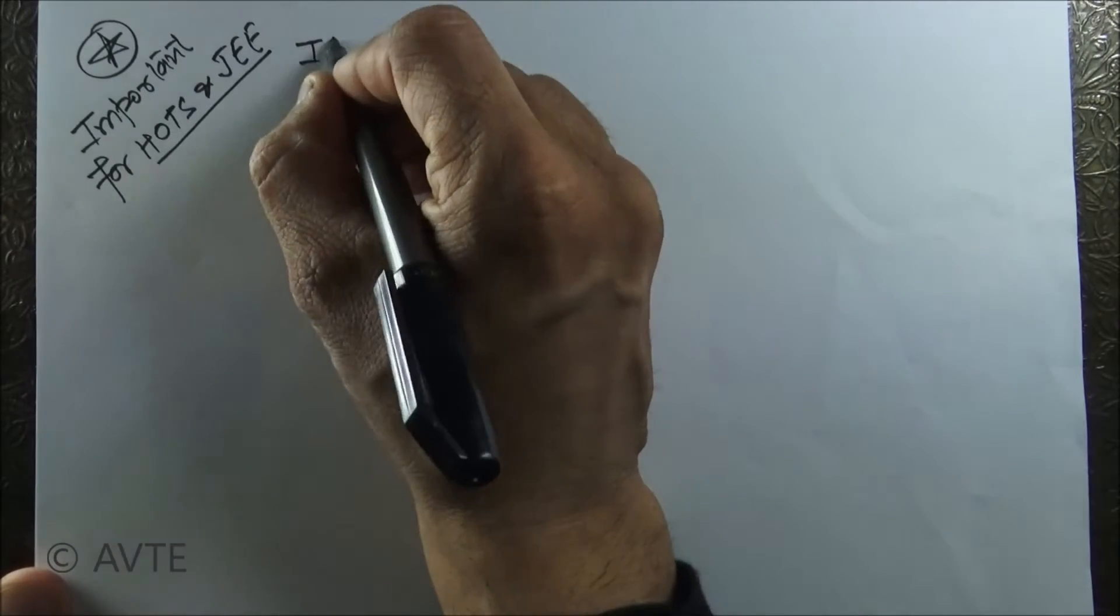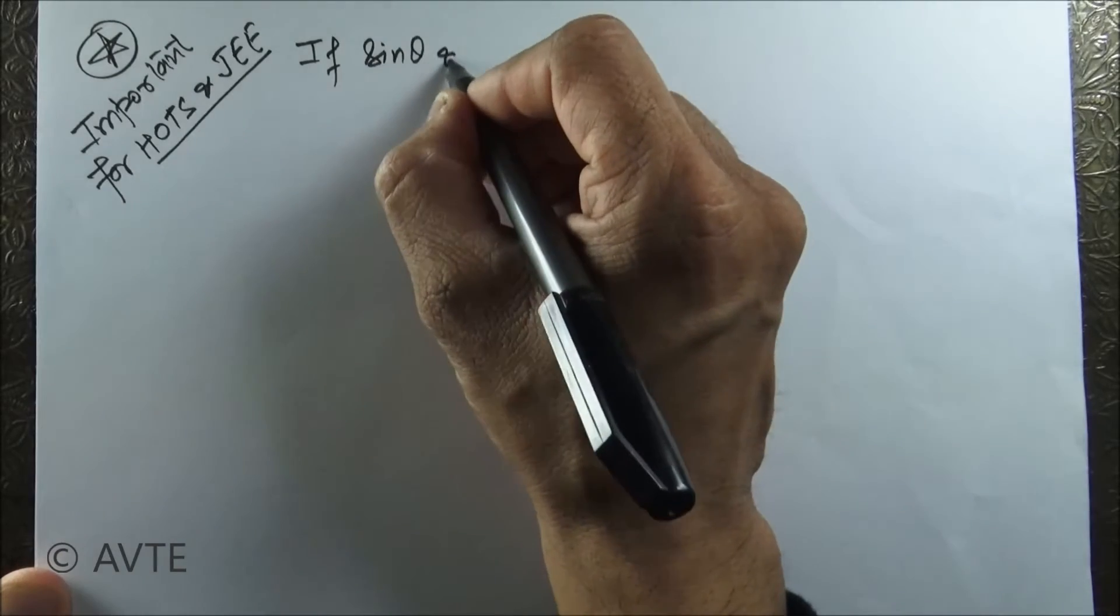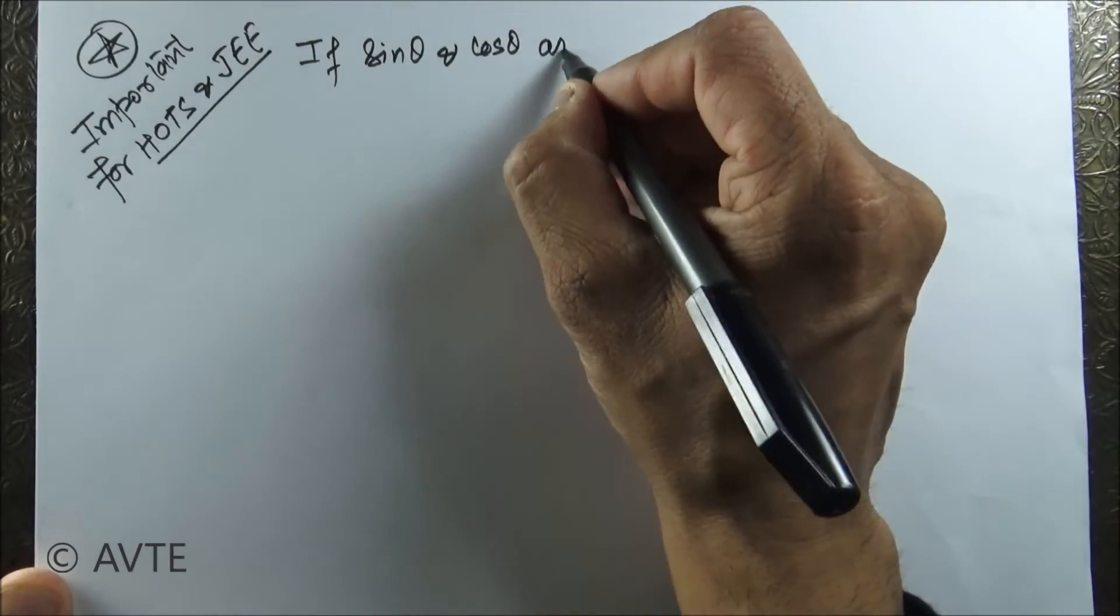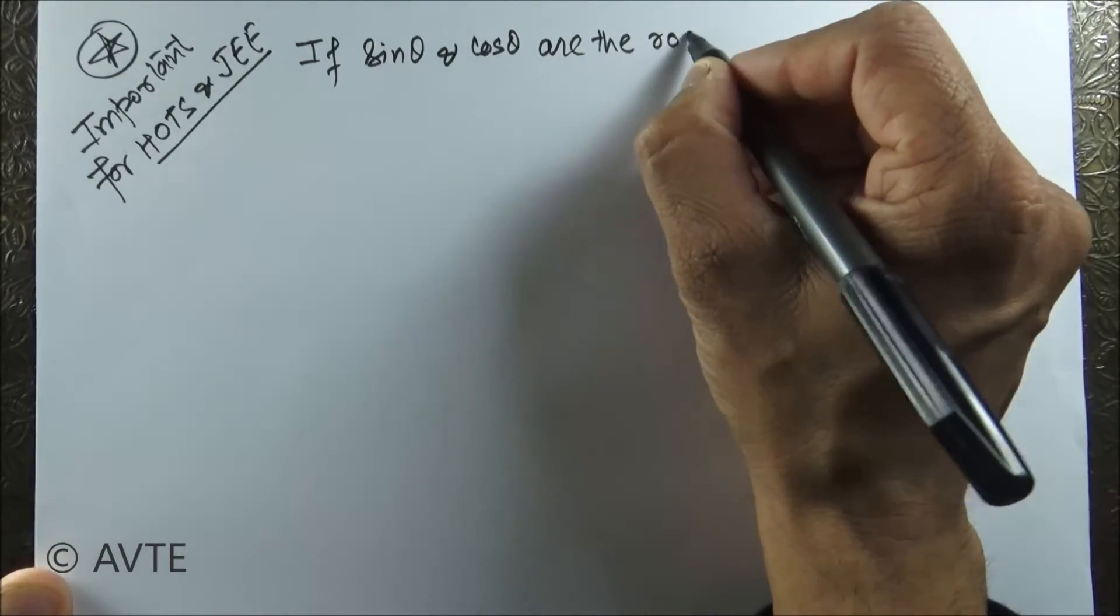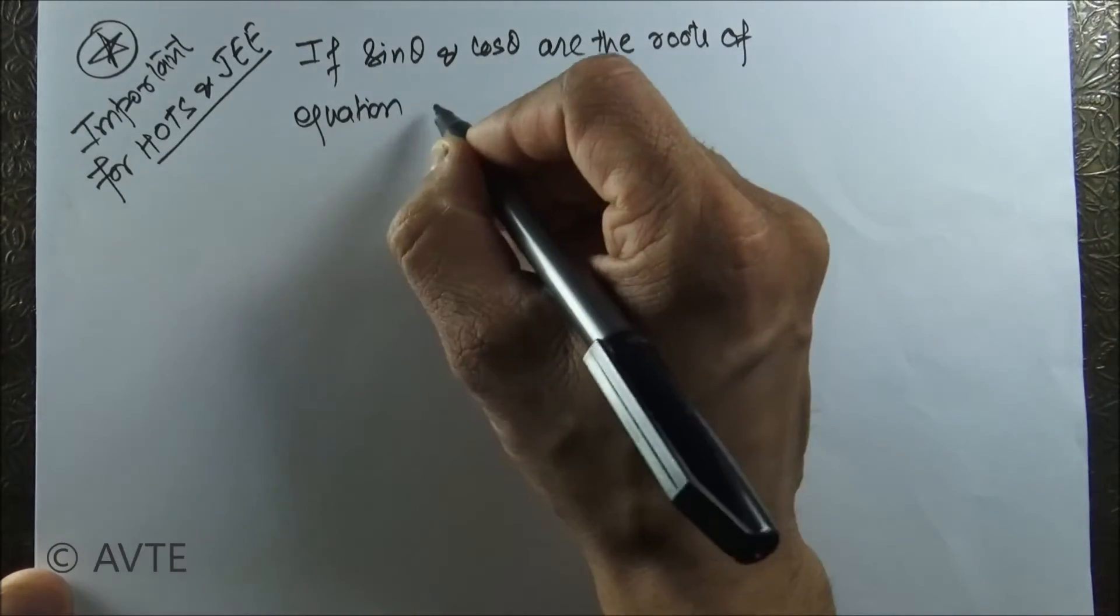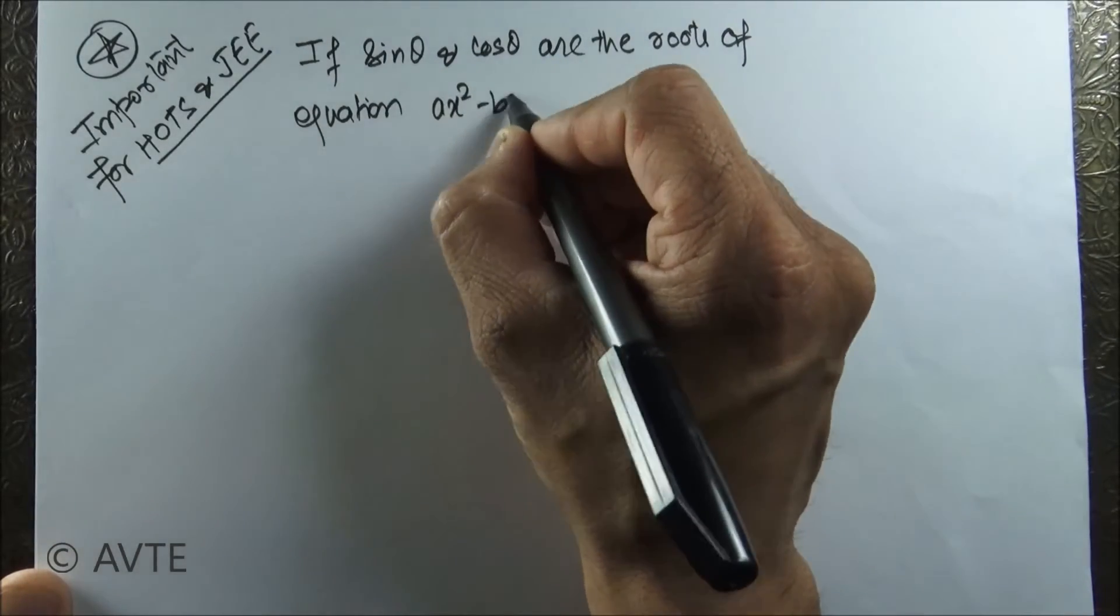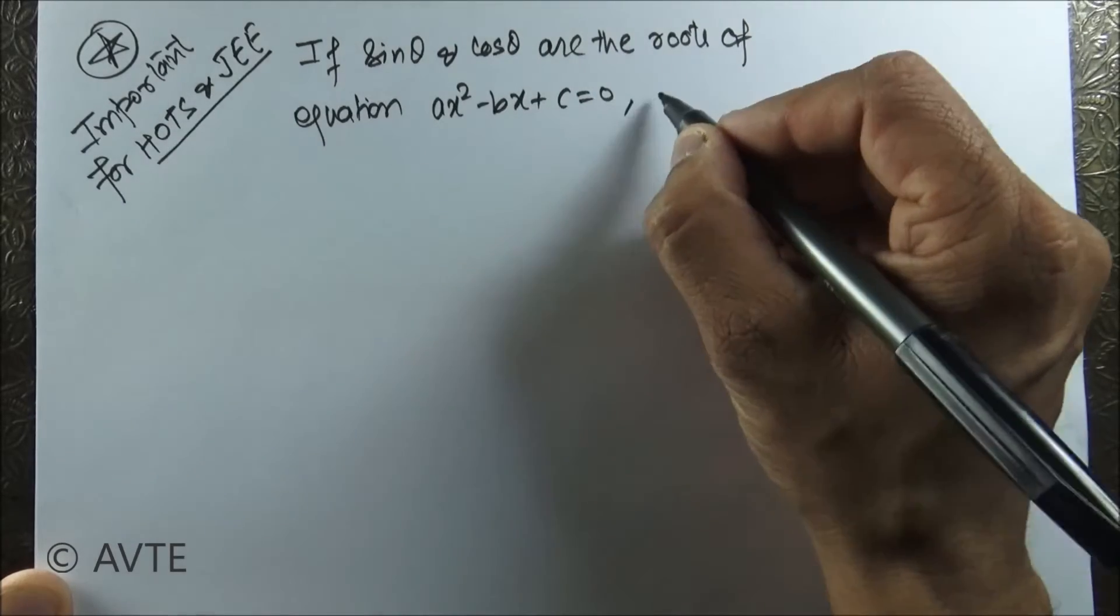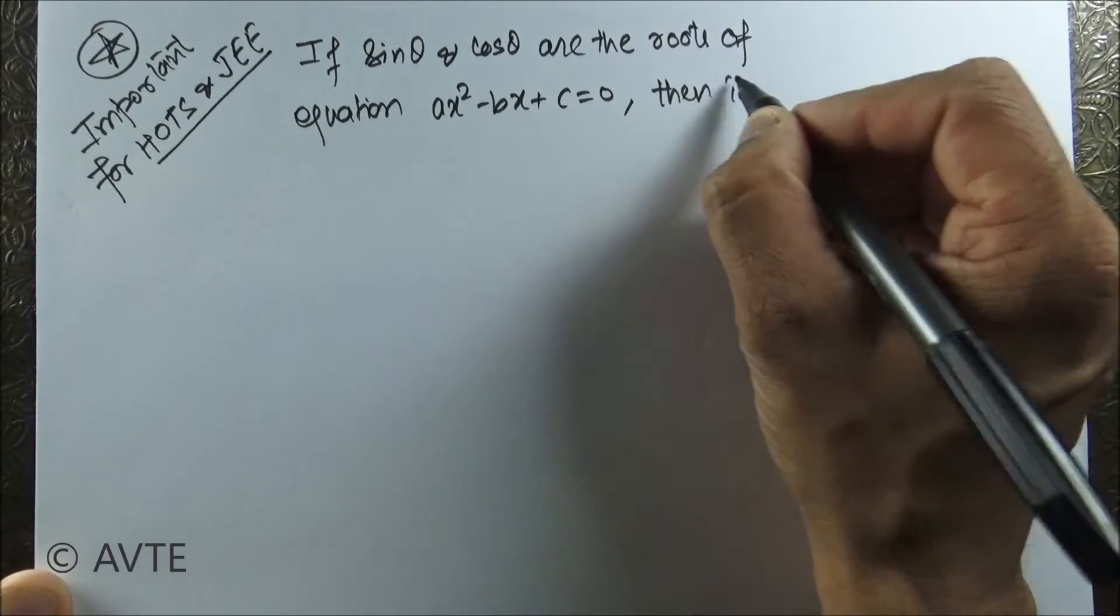Hello students, welcome back. Welcome to another question on HOTS and JEE. This question is related to trigonometry and quadratic equation. The question says, if sine theta and cos theta are the roots of equation a x squared minus b x plus c equals zero, then is it true that a squared plus b squared equals 2 a c?